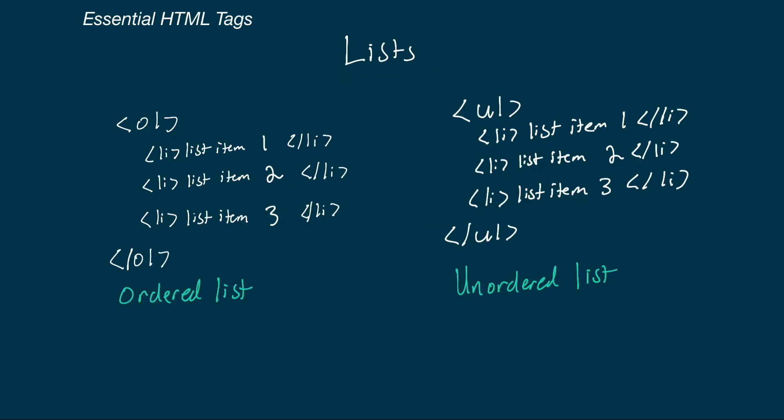Lists allow us to list out information. There are two main types: ordered and unordered lists. An ordered list uses the OL tag and has children that are list items (LI tags) — the only children an ordered list can take. Each LI tag is one item. For example, recipe steps would be an ordered list since you do them in order; by default the browser displays these as sequentially numbered items. An unordered list works the same way except there's no defined order — a to-do list is a good example where you just need to do all items. By default, these display as bullet points.